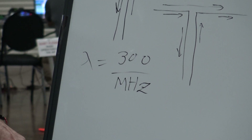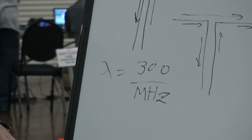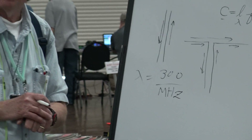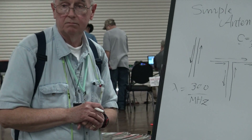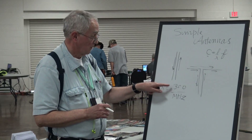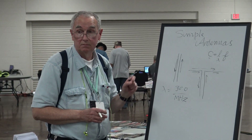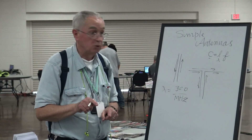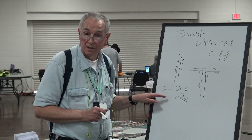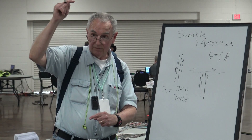The wavelength of an electromagnetic wave in megahertz is 300 over that frequency. So what would be the wavelength of a 150 megahertz signal? 300 over 150? Two — two meters. That's a full wavelength.